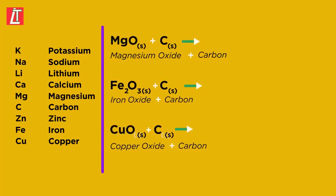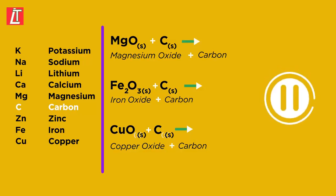We added the element carbon to the reactivity series at the start of this video, so now let's use it. Decide which of these reactions will go and name the products. Here's a hint: carbon oxide is carbon dioxide. Pause the video and have a think.